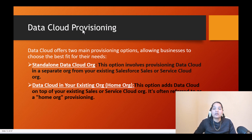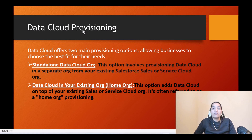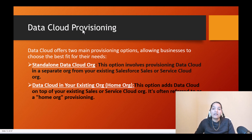The reason to do that is to keep their customer data completely separate from their data cloud org. With the help of connectors, they can bring in the data from those other Salesforce orgs into the data cloud-enabled org. So the standalone data cloud org option is used when the business is too complex and you want to keep things completely separate, then bring data in via connectors.